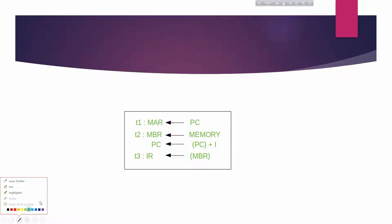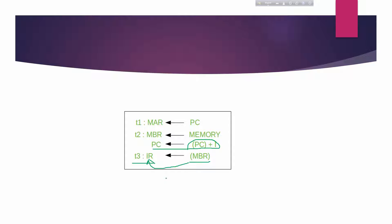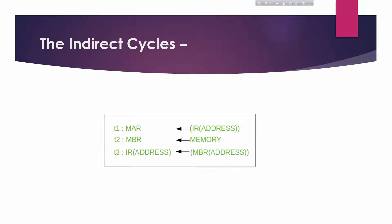The PC value has been incremented by one. In the third time unit (t3), move the content of MBR to the IR. Note: the second and third micro-operations both take place during the second time unit. Now we need to jump into the indirect cycle.